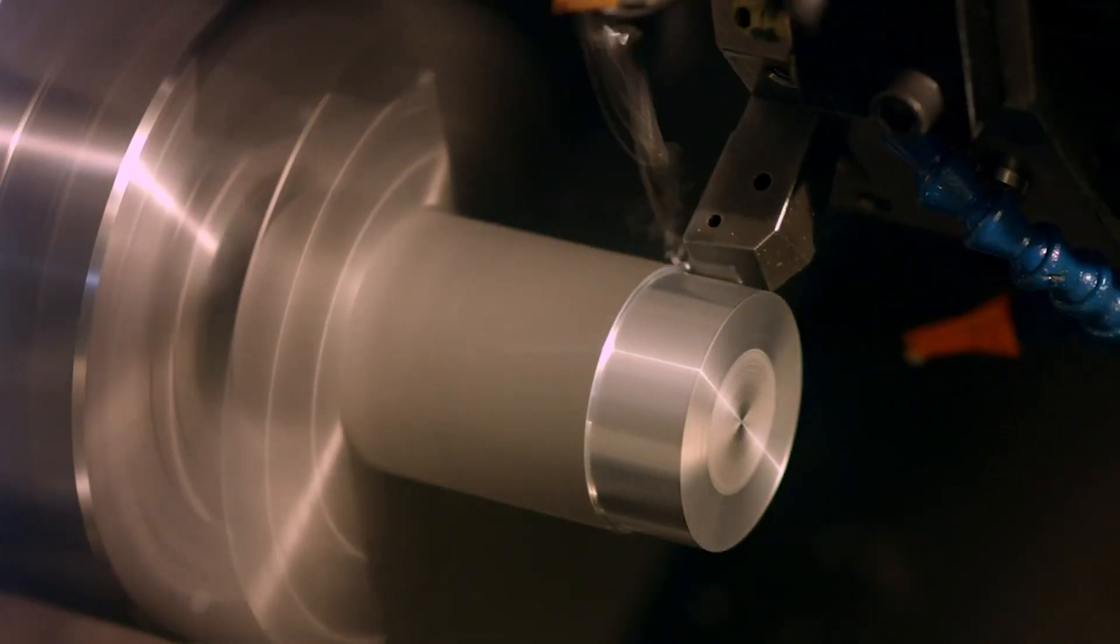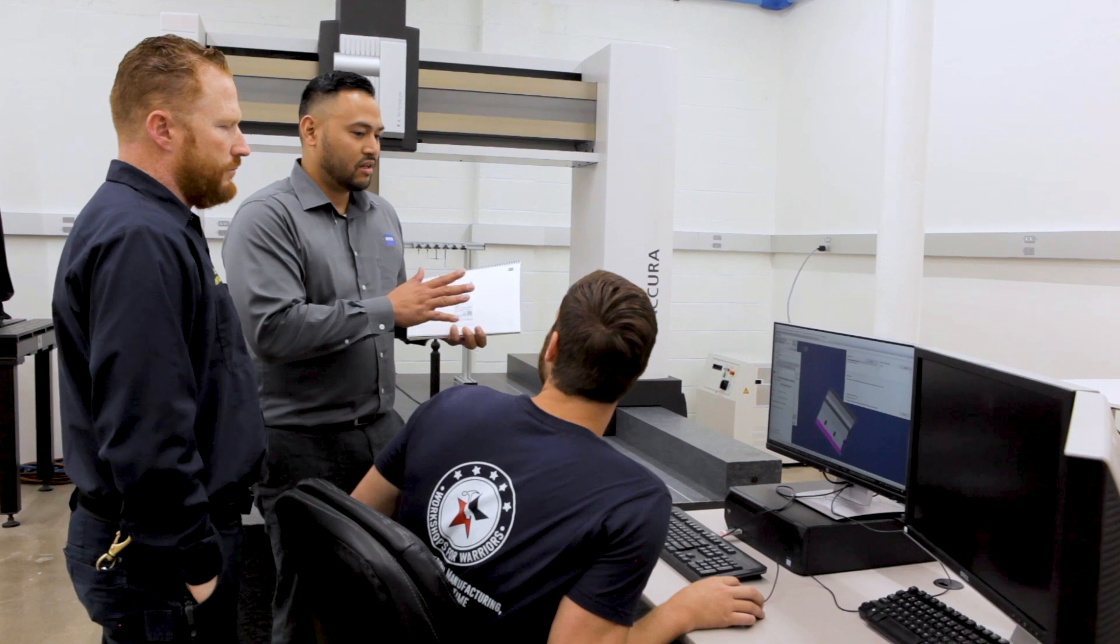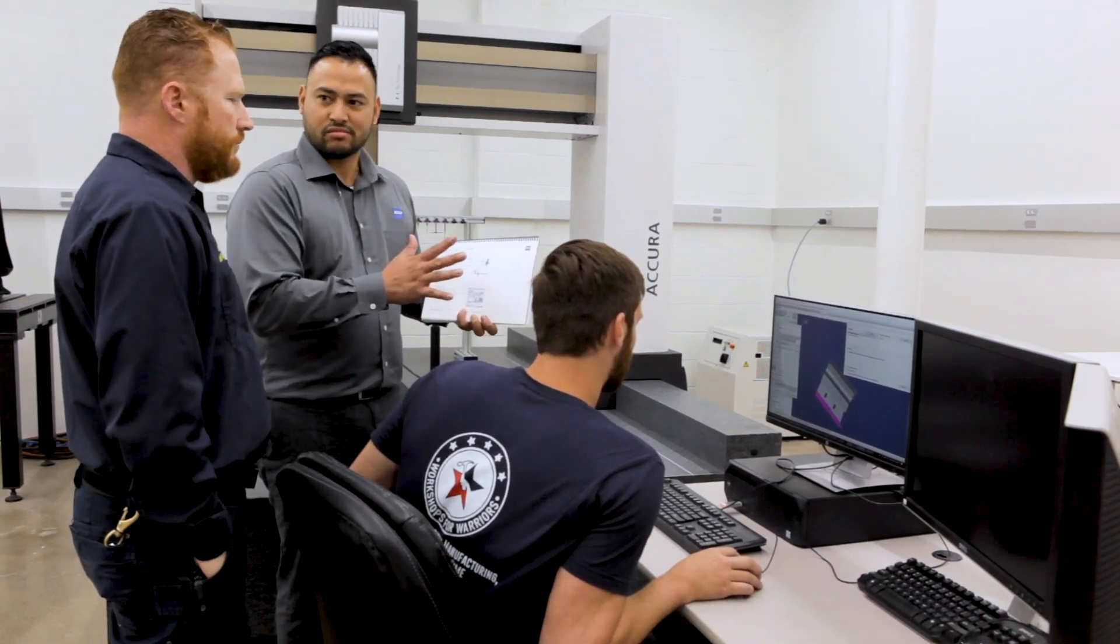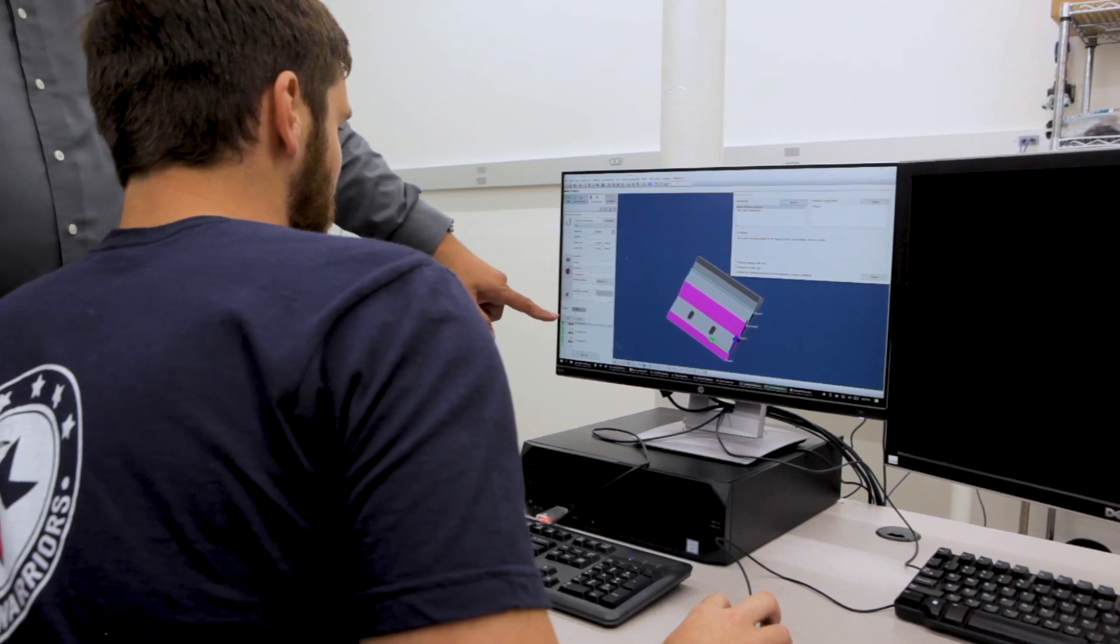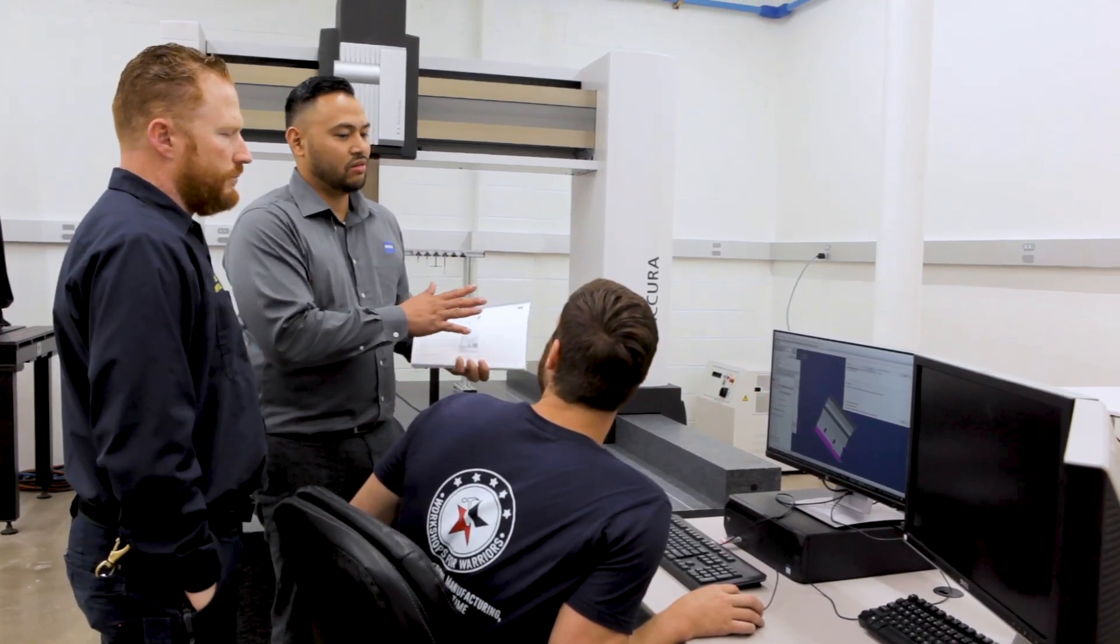And kind of completing that whole package of art to part is inspection and making sure those parts are good. So Zeiss bringing in their CMM and teaching us how to use a coordinate measurement machine and how to accurately check parts kind of completes the whole package. That's going to be very beneficial for our students because they'll be able to get out into the industry knowing the entire manufacturing process, not just a piece of it.